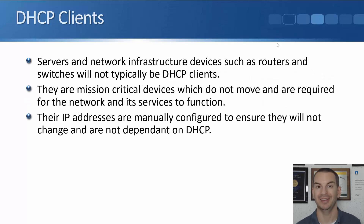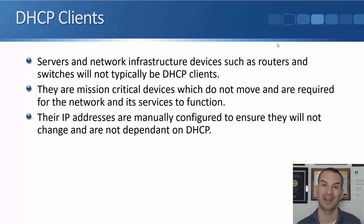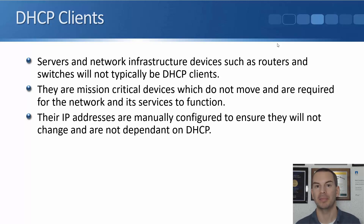Servers and network infrastructure devices — like your routers, switches, and firewalls — on the other hand, are not good candidates to be DHCP clients. They're mission-critical devices required for the running of the network and its services. Their IP addresses are going to be fixed because they're accepting incoming connections, so you'll manually configure them to make sure they never change. Also, you don't want them to be reliant on the DHCP server being up and running.